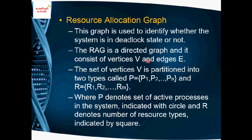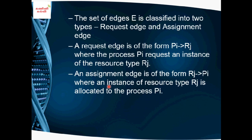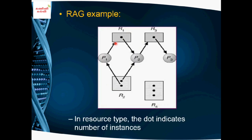The resource allocation graph is a normal directed graph with vertices and edges. Vertices represent processes and resources. There are two types of vertices: one for processes and one for resources. In the diagram, squares or rectangles indicate resources, and circles indicate processes.